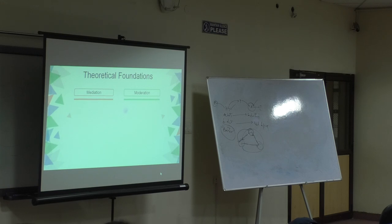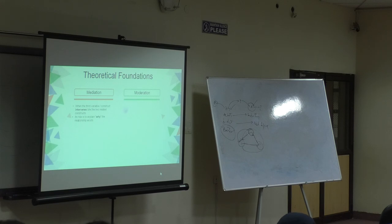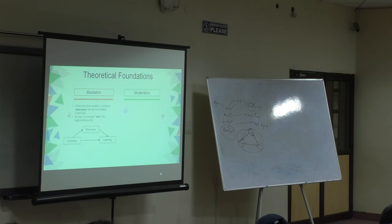Now let's try to understand mediation and moderation. Mediation is when a third variable or construct intervenes between two related constructs. Its role is to explain why the relationship exists. For example, curiosity leads to learning, and in this there is a mediating variable called discovery. If I am discovering something new, I am more likely to learn; if I am discovering nothing new, I am less likely to learn. So discovery is a mediating variable.